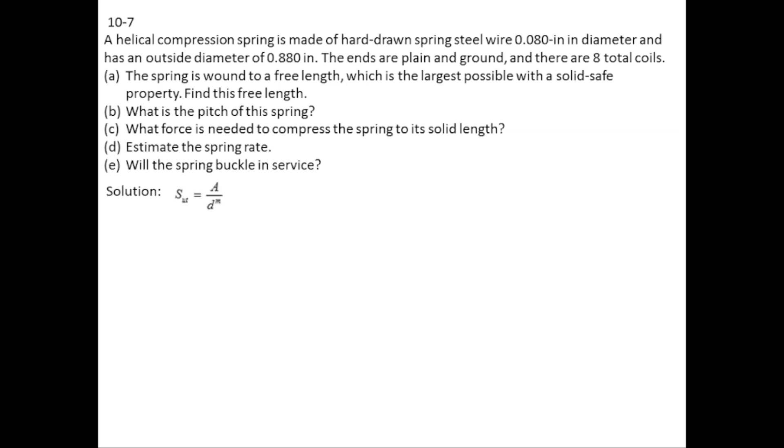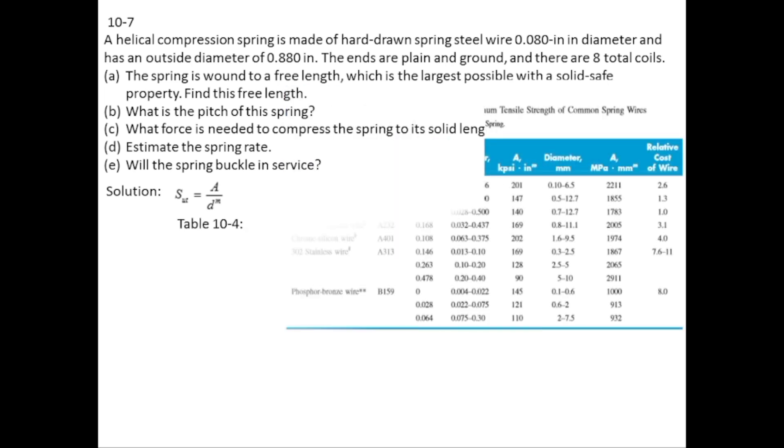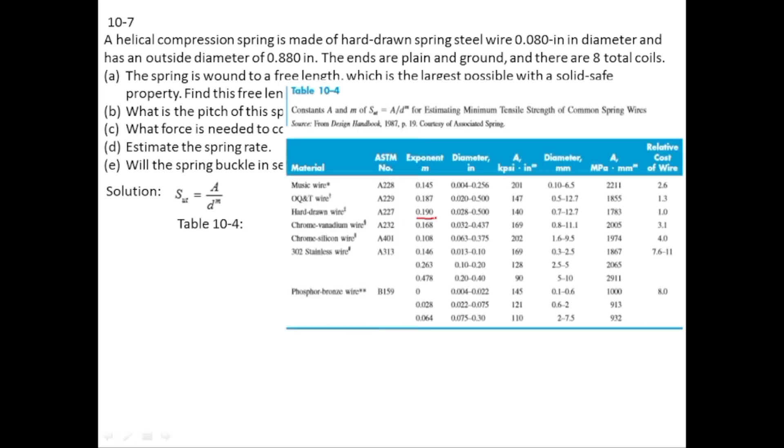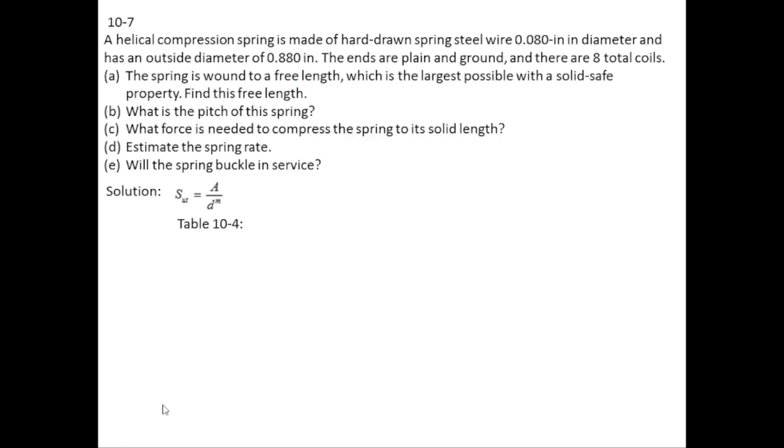The ultimate tensile strength is equal to A divided by d to the power m. The m values are taken from table 10.4, and for hard drawn wire m equals 0.19 and A equals 140 kpsi. Putting these values in the formula yields 226.2 kpsi.